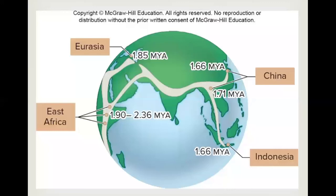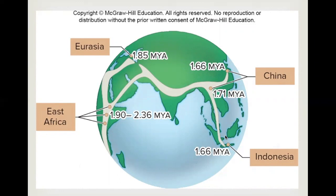Here is a map showing the migration of Homo erectus, with dates indicating the progression from Africa to Eurasia, China, and Indonesia in succession.